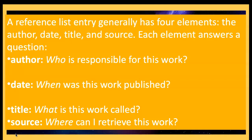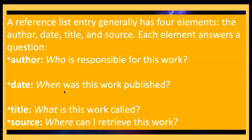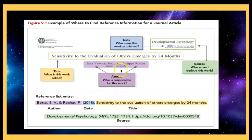In a reference list, there are four things required for all references: author, date, title, and source. If you do not have this information, your reference is not complete. Author is who wrote the work; date is when it was published — if there is no date, we put ND; title is the name of the work; and source is where you got the information from.